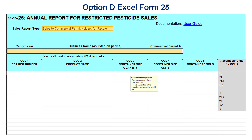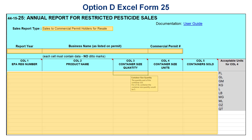Separate reports must be completed for each sales report type. Please do not submit one form for both types of sales. Next, fill in all five columns for each restricted-use product sold. Please remember that if you sell more than one container size of a product, list each container size as a separate entry in your report. Please do not rearrange, customize, delete, or add columns. Doing so will take the report out of the compliant format, which may lead to a rejected report.